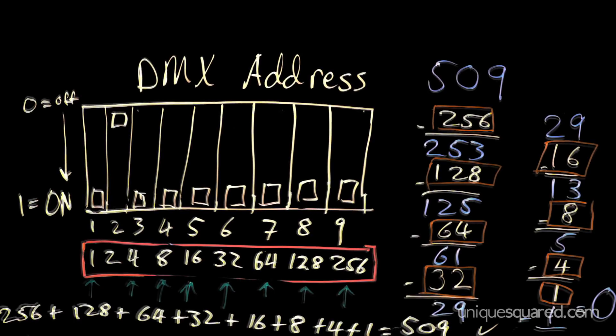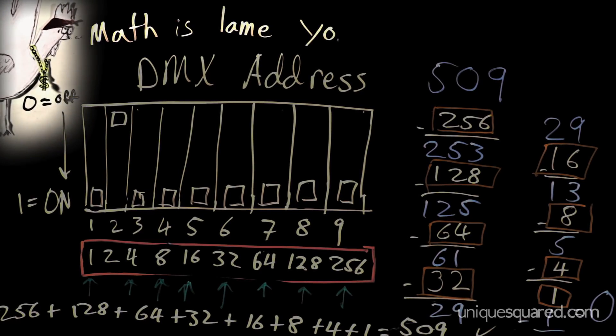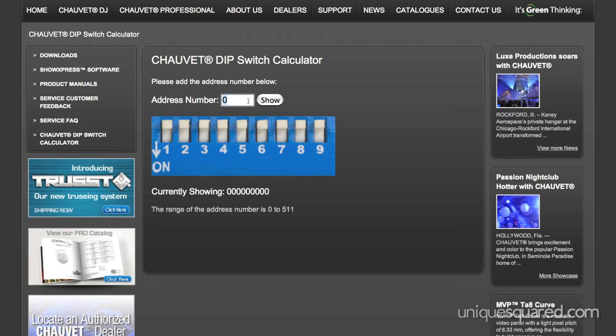Now, if you're like me and prefer to not do math, there is an easy way out. Chave has an online dip switch calculator. Check the description below for the link. All you have to do is enter the DMX address that you want, and it will give you the appropriate dip switch configuration.